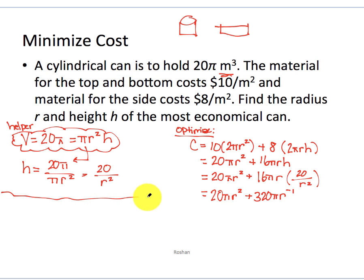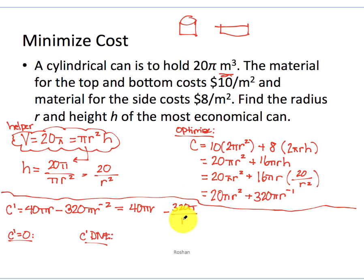So now our goal is to minimize. So we're going to take a derivative. So c' is going to be 20 times 2 is 40πr minus 320πr⁻². And to find the critical values, remember that I need to see where c' equals 0 or where c' does not exist. In order to really look for where it does not exist, I really want to get this all into one big fraction so that I can just set the numerator equal to 0 for this part and the denominator equal to 0 for this part.